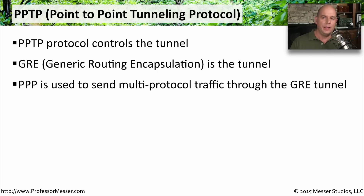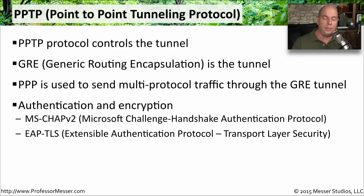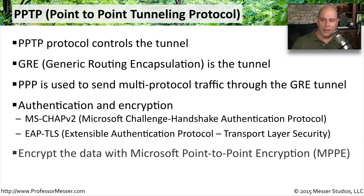Unlike PPP, PPTP has the ability to authenticate and encrypt information. One way to do that is through MS CHAP version 2 — the Microsoft Challenge Handshake Authentication Protocol — used to authenticate someone on the tunnel. To encrypt the data, we can use EAP-TLS, which stands for Extensible Authentication Protocol Transport Layer Security. You may also see data encrypted using Microsoft's Point-to-Point Encryption, MPPE, when using Windows-type PPTP.